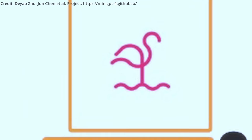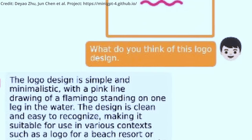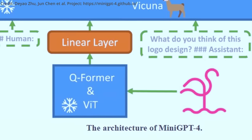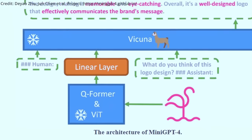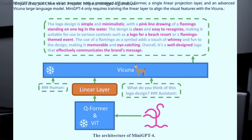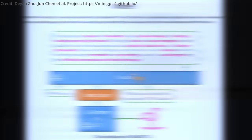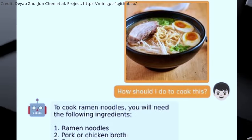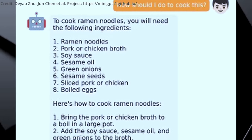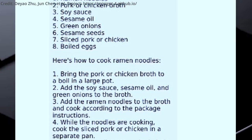The creators of Mini-GPT4 employed a two-stage training approach to optimize the model's performance. The first stage involved pre-training the model on a vast collection of aligned image-text pairs, while the second stage consisted of fine-tuning the pre-trained model with a smaller, high-quality image-text dataset using a designed conversational template. This method improved generation reliability and usability while maintaining computational efficiency.